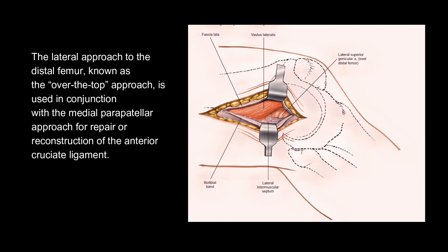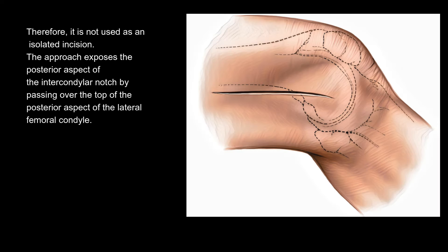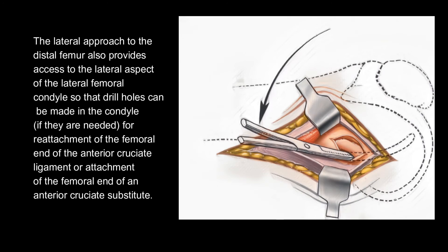The lateral approach to the distal femur, known as the over-the-top approach, is used in conjunction with the medial parapatellar approach for repair or reconstruction of the anterior cruciate ligament. Therefore, it is not used as an isolated incision. The approach exposes the posterior aspect of the intercondylar notch by passing over the top of the posterior aspect of the lateral femoral condyle.